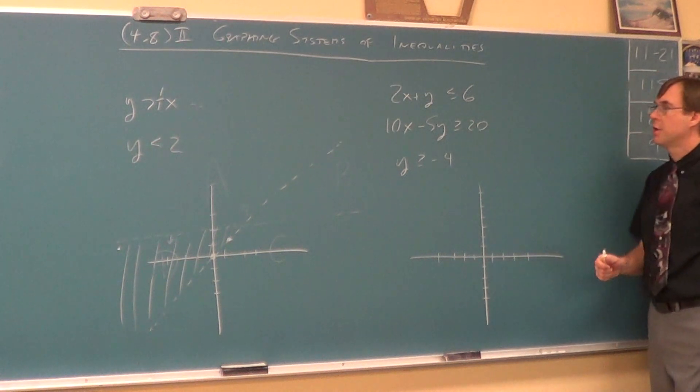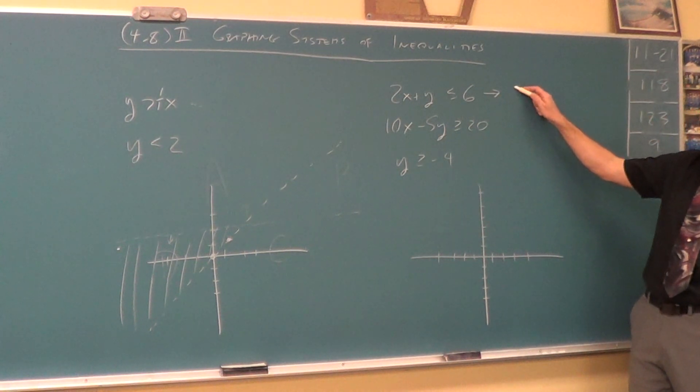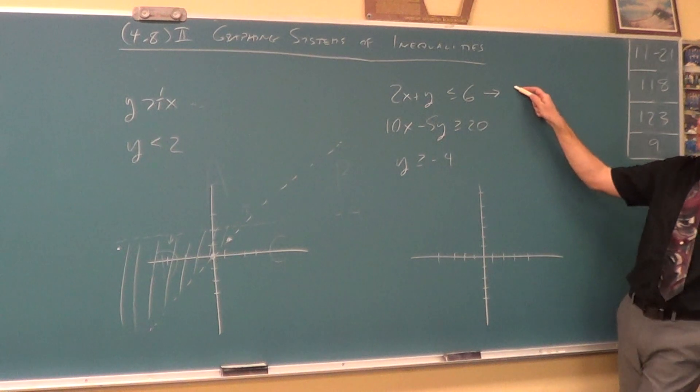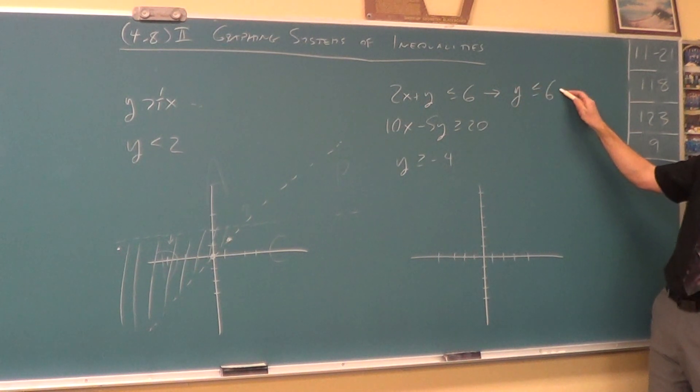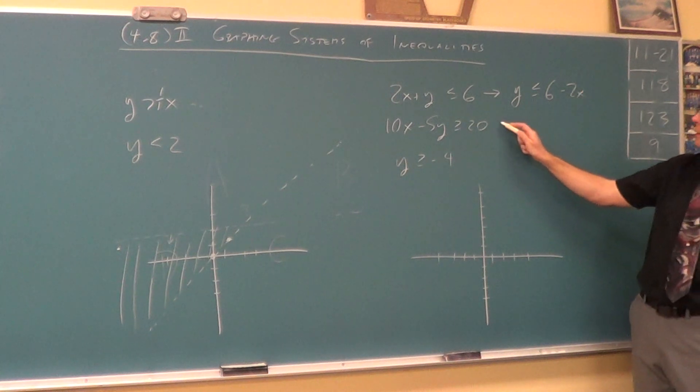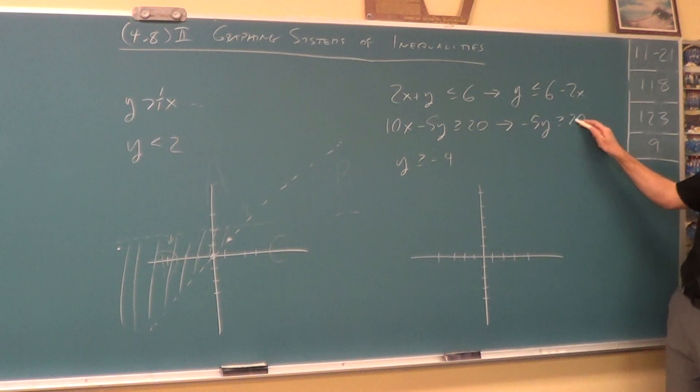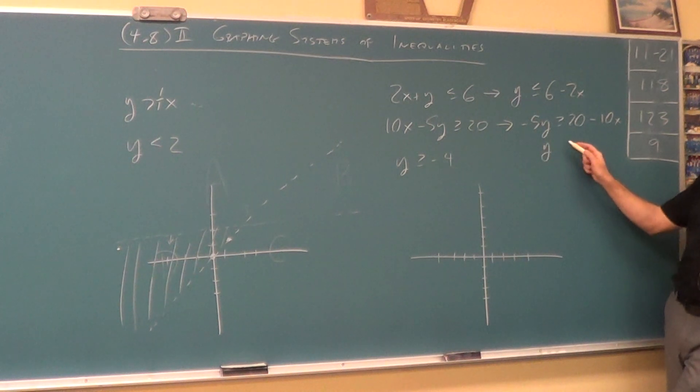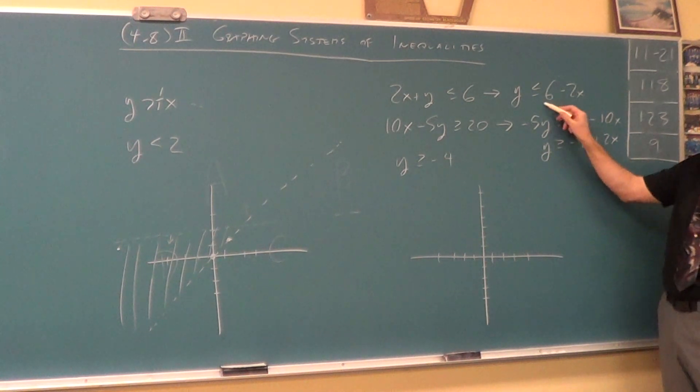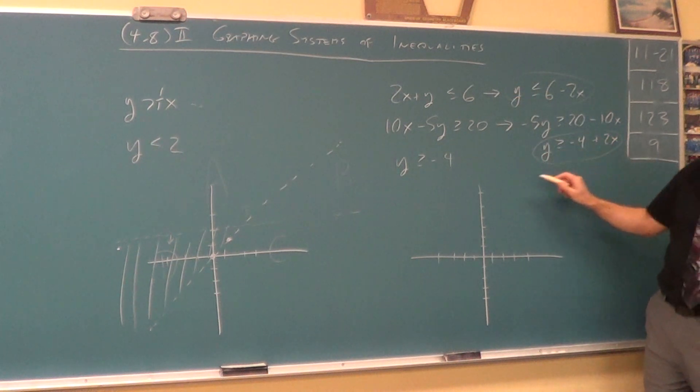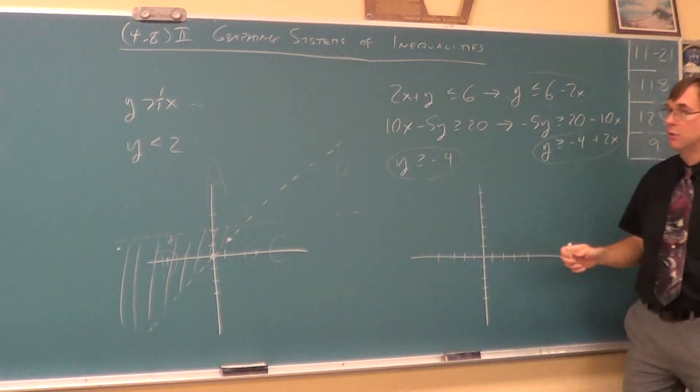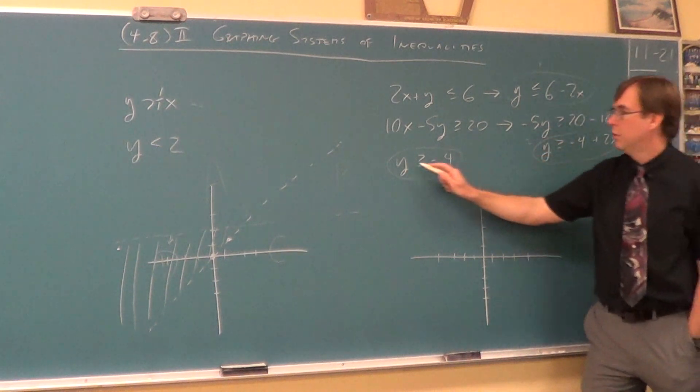So let's go one more and then I'll just turn you loose. This is less ready to graph. Why is this less ready to graph? Y is not alone. So leave the y, leave the 6, minus 2x. This one at first, leave the negative 5y, leave the 20, negative 10x. When you divide? Flip the sign. Negative 4, plus 2x. And we're going to have three things to graph. We need to graph this, we need to graph this, and then that one was okay. So one, two, three.